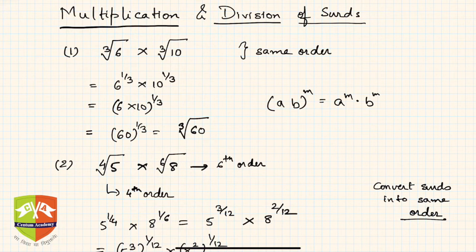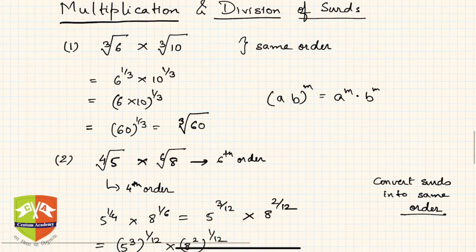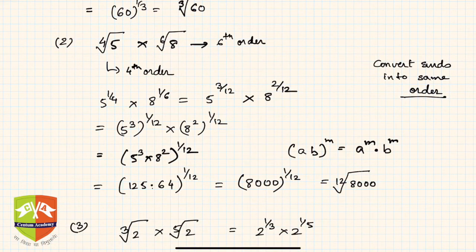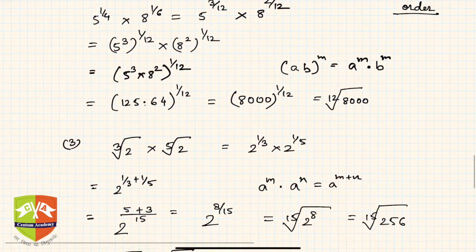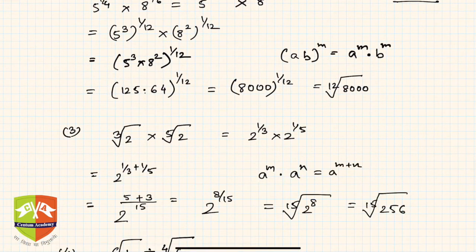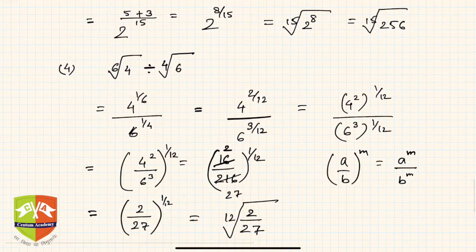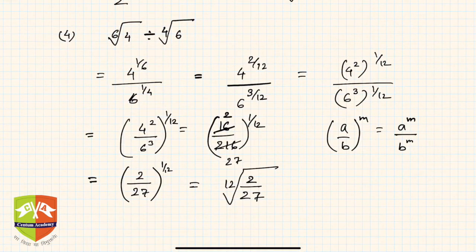So that is how division works. To summarize: if the order is the same, multiply or divide directly. If the order is different, first convert to the same order. If the order is different but the base number is the same, use the exponent addition rule. Always remember — making the same order helps. Thank you.